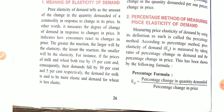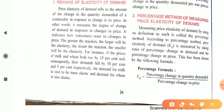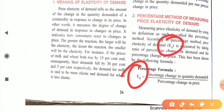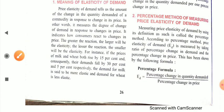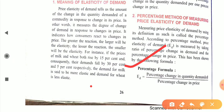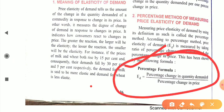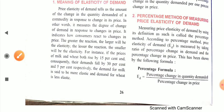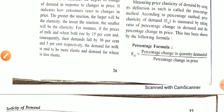According to the percentage method, price elasticity of demand, represented by E.D. (elasticity of demand), is measured by taking the ratio of percentage change in demand to percentage change in price. The formula is: E.D. equals percentage change in quantity demanded divided by percentage change in price. This formula represents our percentage method.